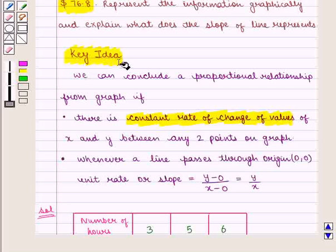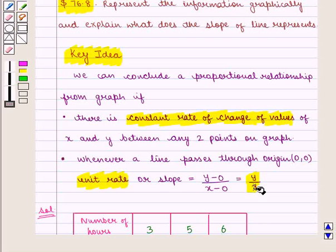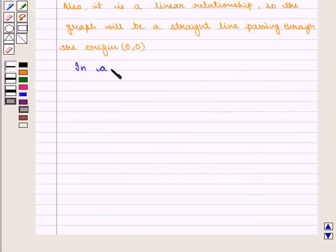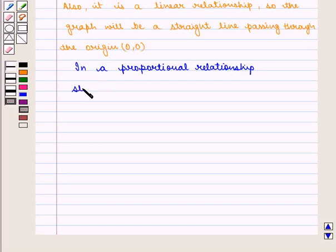And from the key idea we know that we can conclude a proportional relationship from graph if a line passes through the origin that is 0,0 and then the unit rate or slope will be equal to y by x. So we know that in a proportional relationship slope is equal to y upon x.